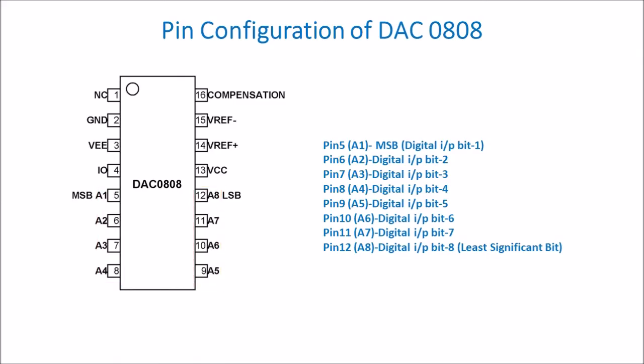The analog output is available at pin number 4. This analog output is in the form of current. Externally, we have to connect a current-to-voltage converter which will convert this output current into voltage, and then we get a voltage analog signal.